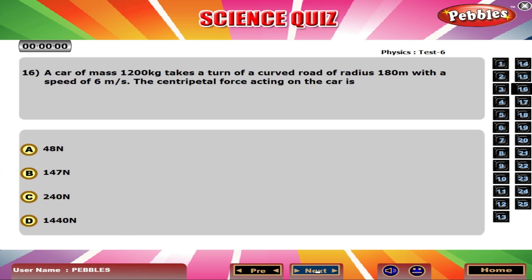A car of mass 1200 kilograms takes a turn of a curved road of radius 180 meters with a speed of 6 meters per second. The centripetal force acting on the car is 240 newton.